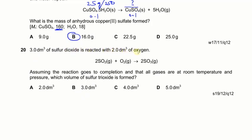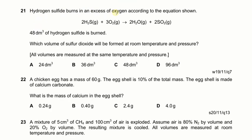Next: 3 dm³ of SO₂ reacts with 2 dm³ of O₂. What volume of SO₃ is formed? According to the equation, 2 moles of SO₂ requires 1 mole of O₂, so 3 moles of SO₂ requires 1.5 moles of O₂. Since we have 2 dm³ of O₂, oxygen is in excess and SO₂ is the limiting reactant. The ratio of SO₂ to SO₃ is 2:2 (1:1), so 3 dm³ of SO₂ produces 3 dm³ of SO₃. The answer is B.